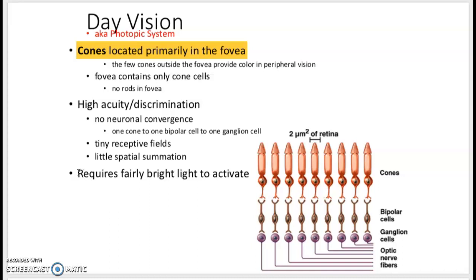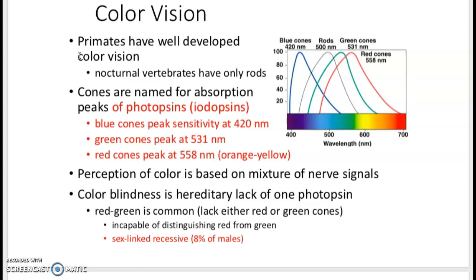The problem with cones is that we need light to activate them. So we have really excellent color vision, and each color gives us different types of cones. For example, we have blue cones, we have green cones, and we have red cones. The perception of the color comes from the mixture of the cones.